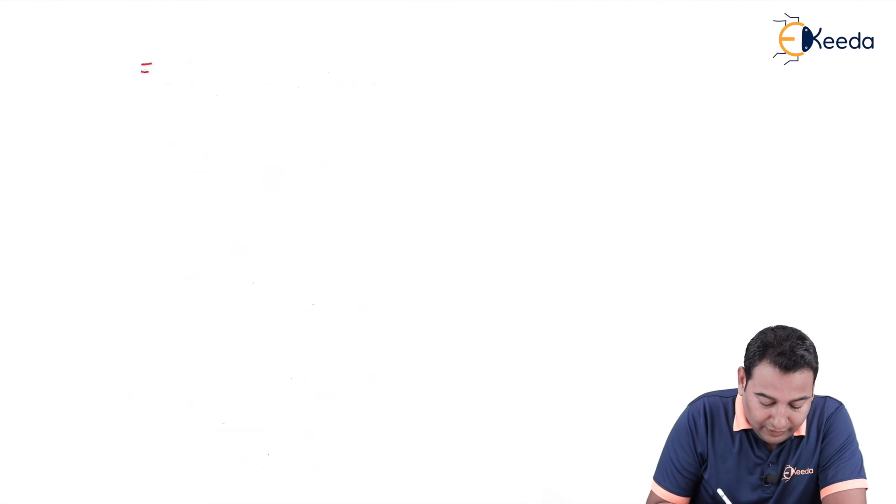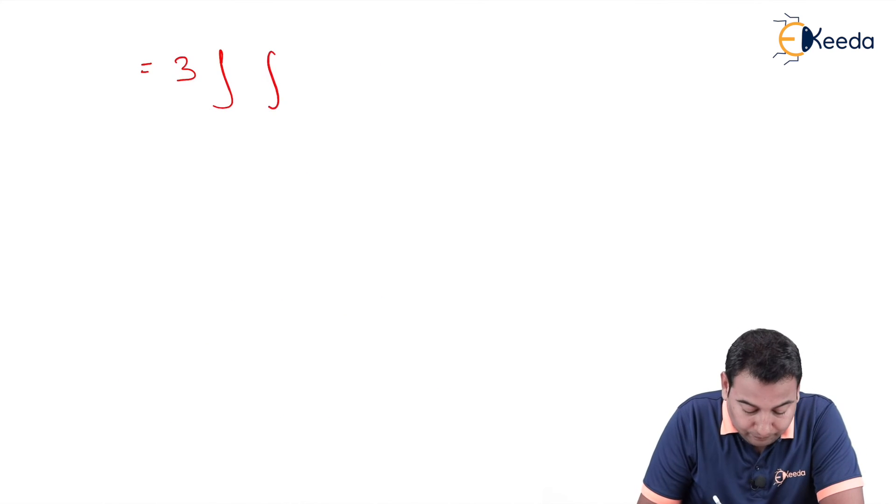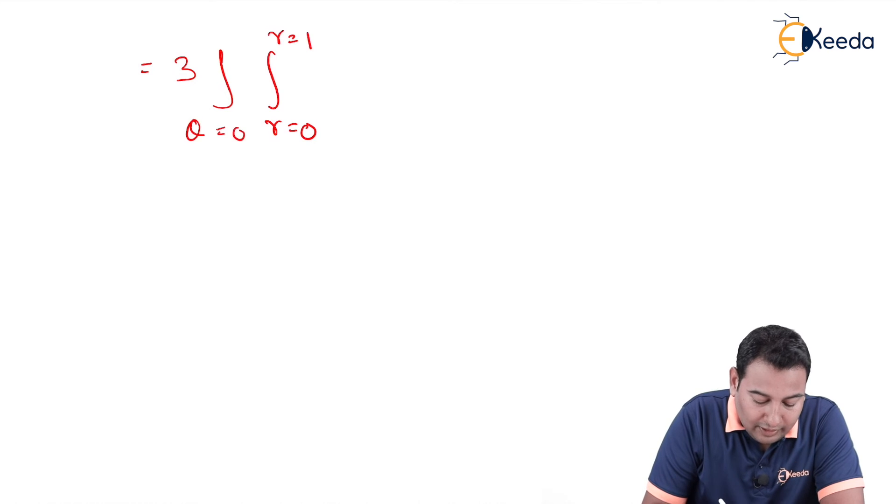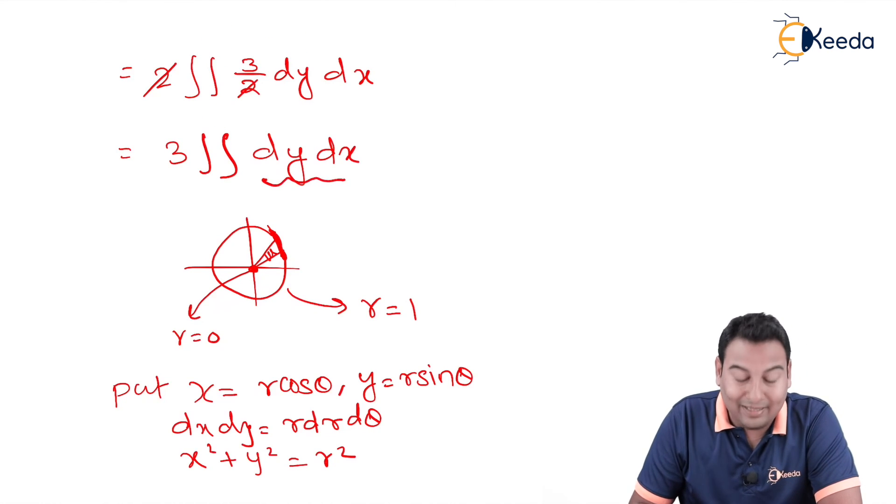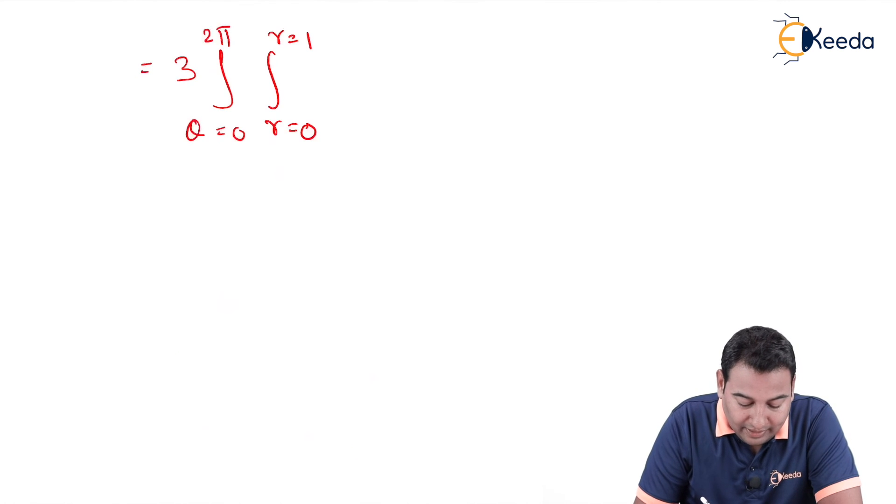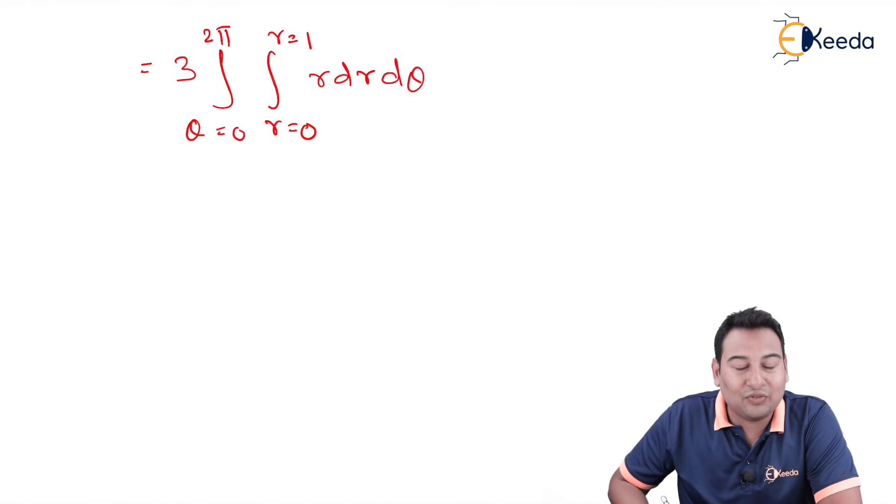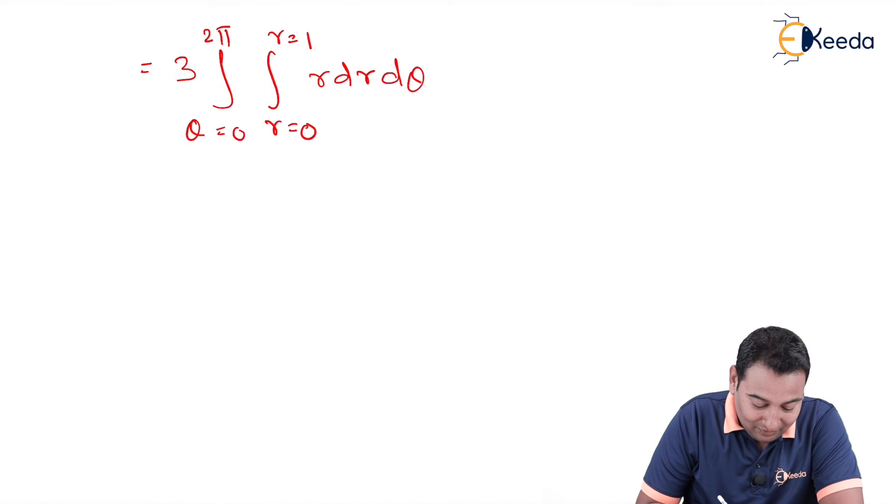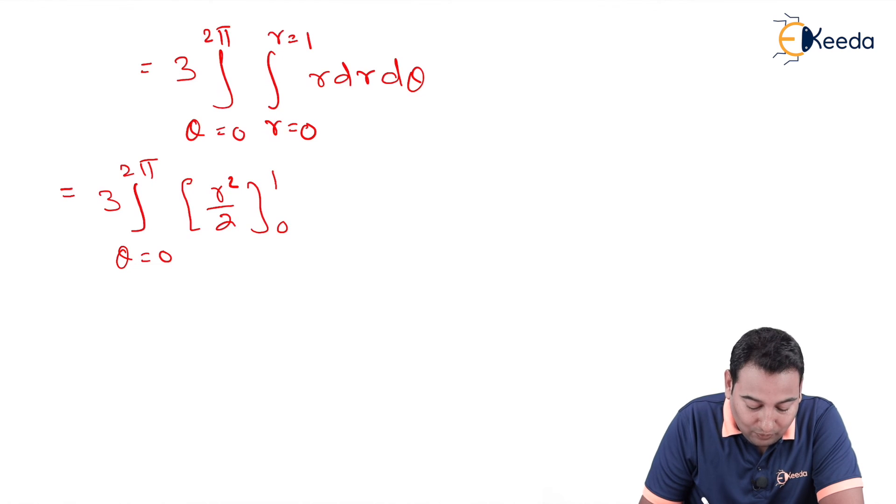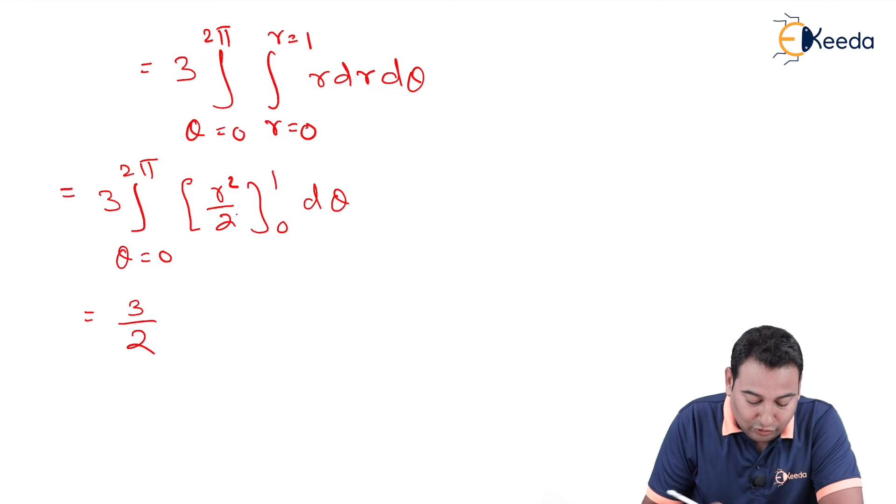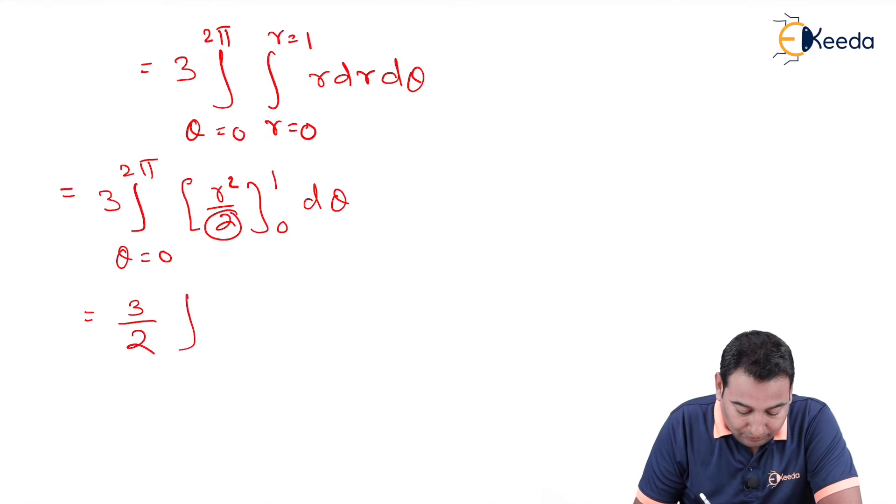Given problem is 3 double integration. Let me put the limits. This is r, this is theta: r equals 0 up to r equals 1, theta is 0 to 2 pi. Inside we do have dy dx. dy dx means r dr and d theta. Let's first evaluate with respect to r. Theta equals 0 to 2 pi. What is the integration of r? r square by 2. Limits are from 0 to 1, and then finally d theta. 3 by 2 is constant, I can take out. Let me substitute the limits.